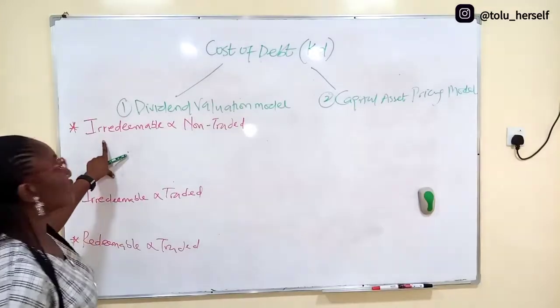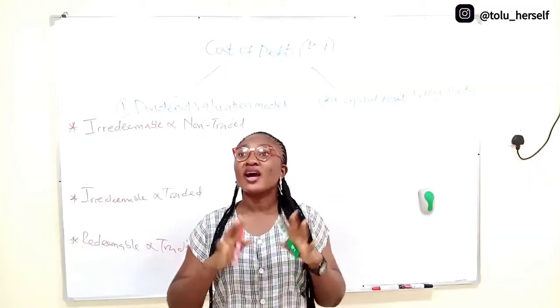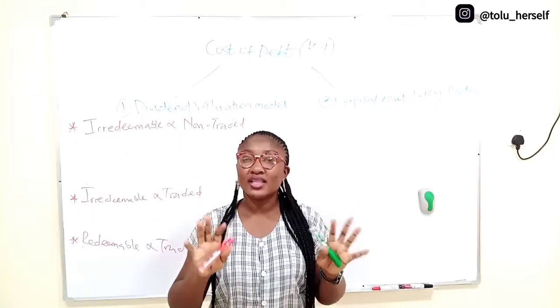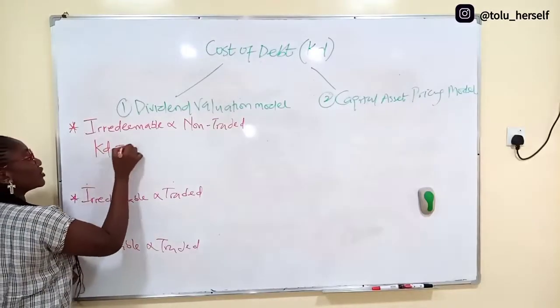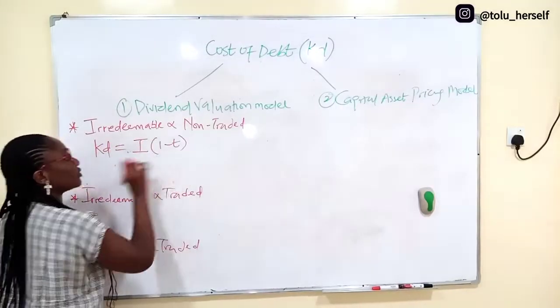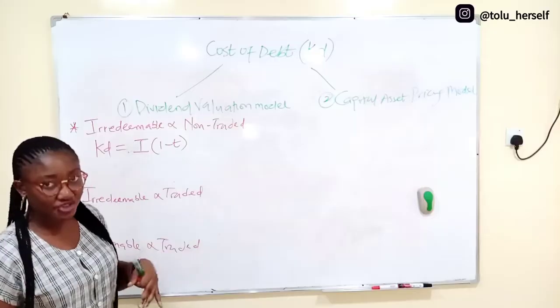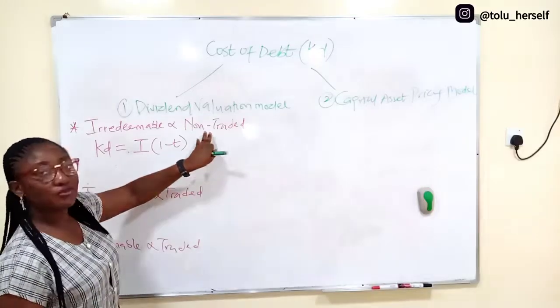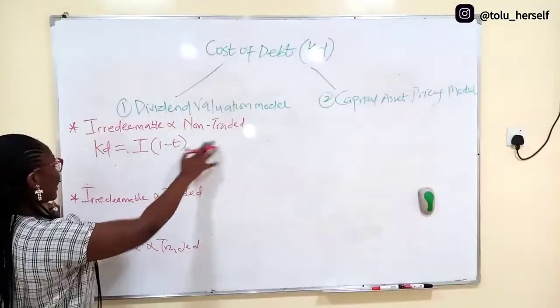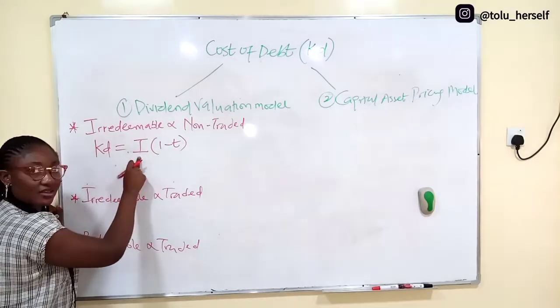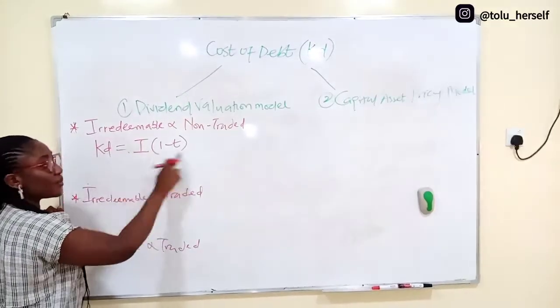What does it mean for a debt to be irredeemable? It means that the debt has no date of repayment, no specified date that the principal will be repaid. So the cost of this kind of debt is equal to interest times one minus T. This is how to evaluate the cost of debt once the debt is irredeemable and non-traded. Non-traded means it cannot be traded in the market, it doesn't have a market value.